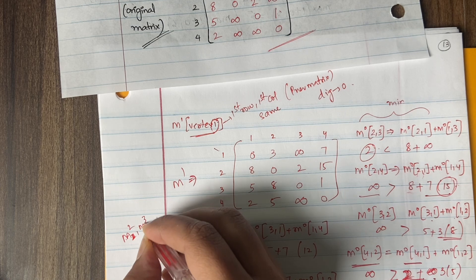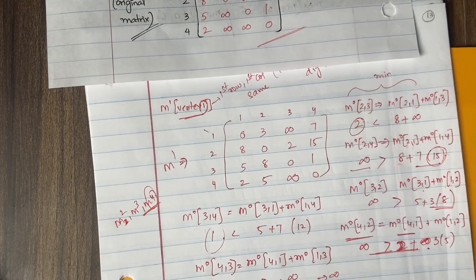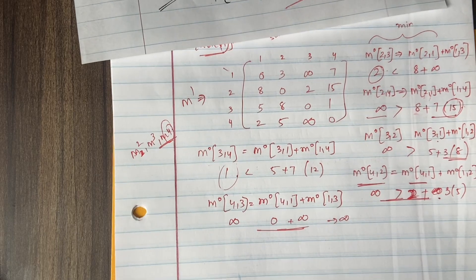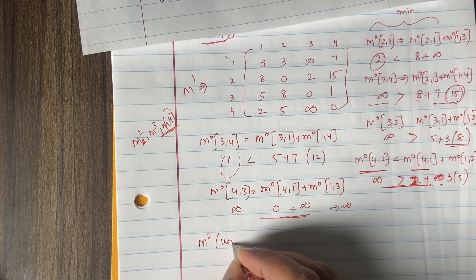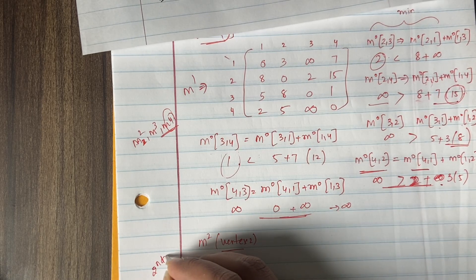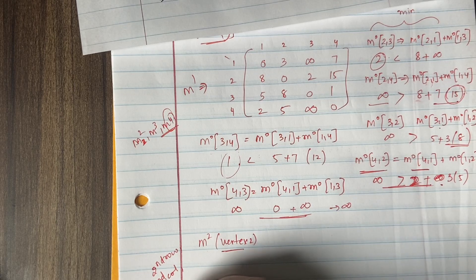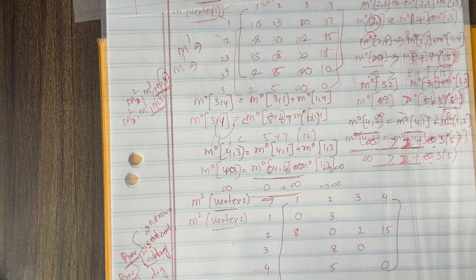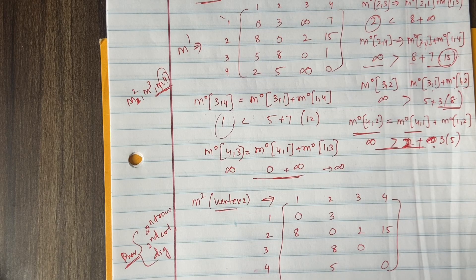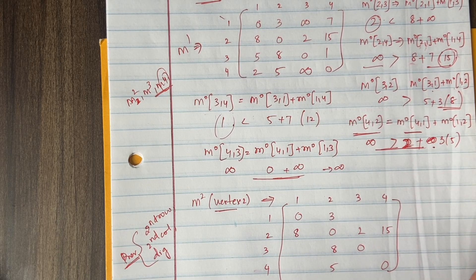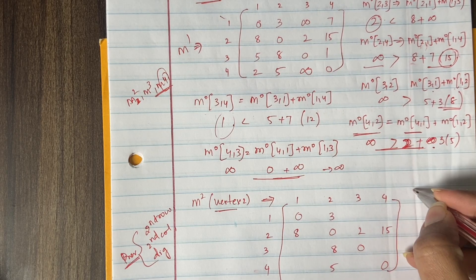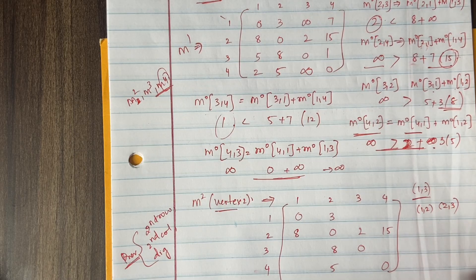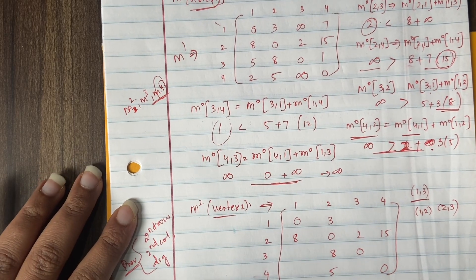Now let's do M2. M2 is for vertex 2, so we copy the second row and second column and all diagonal elements from the previous matrix M1. We are done copying those values. Now we find the missing values using the same process, going through vertex 2.